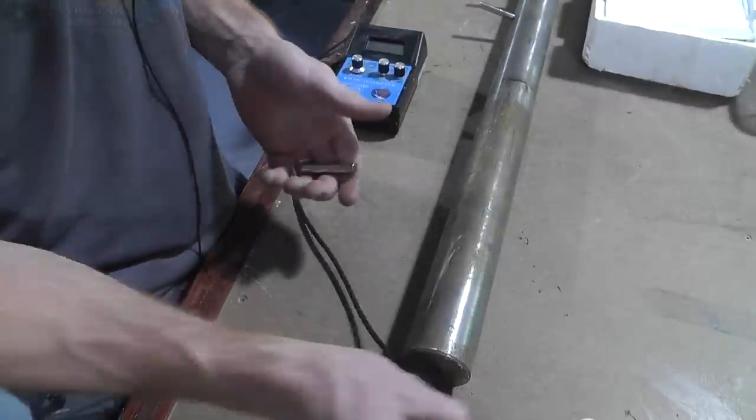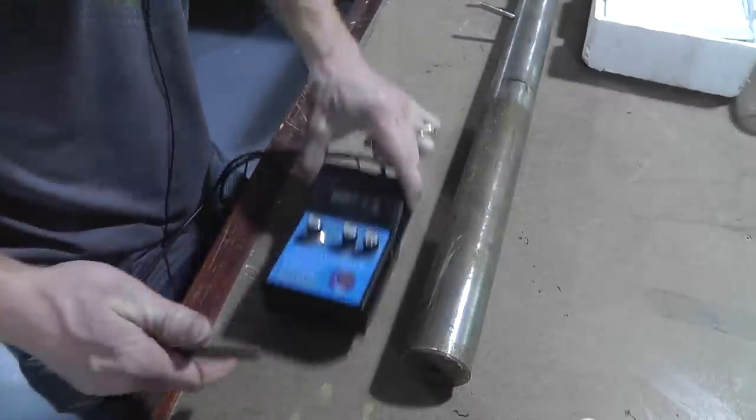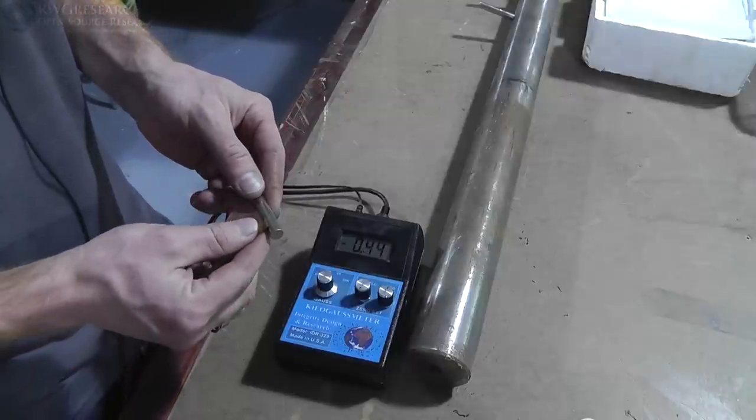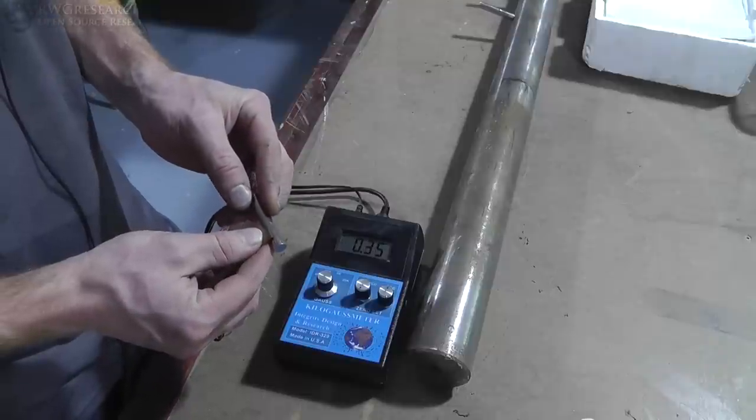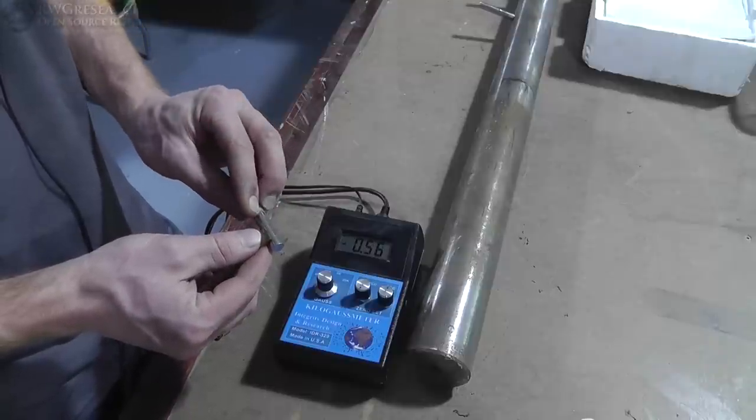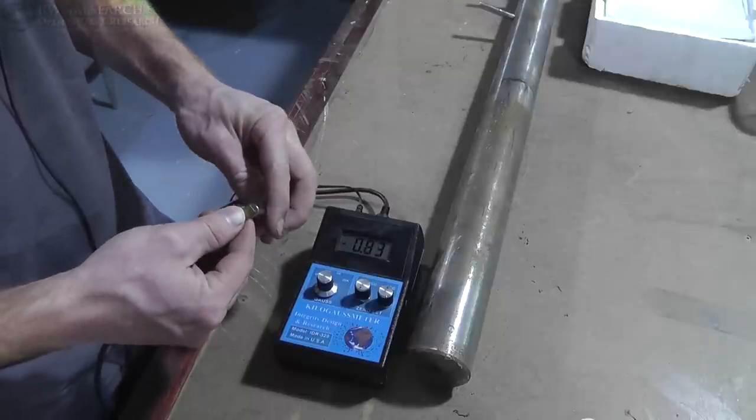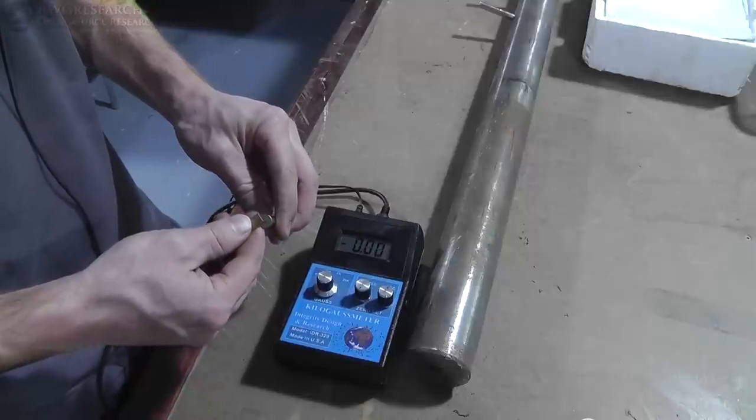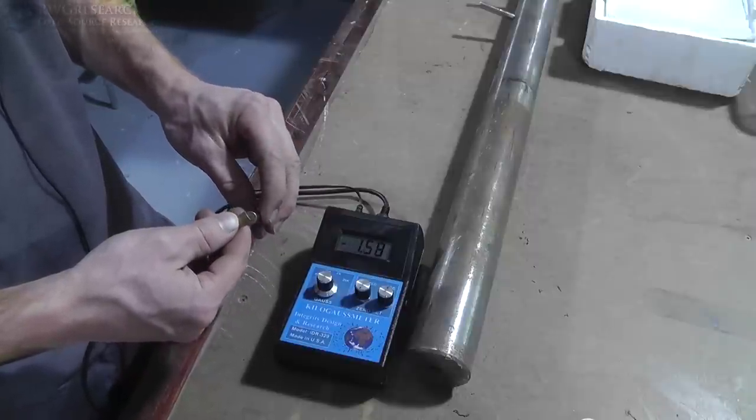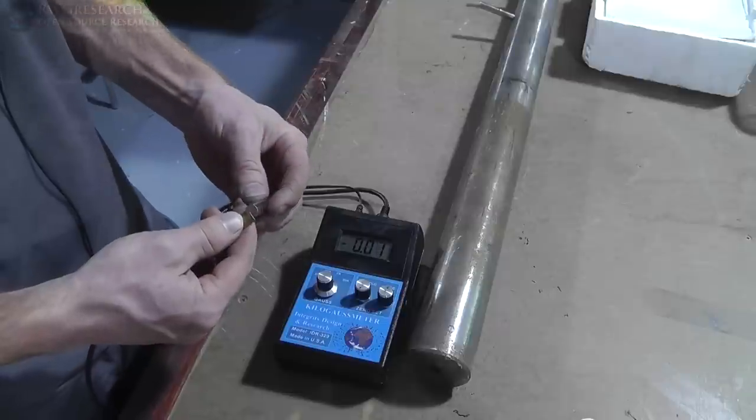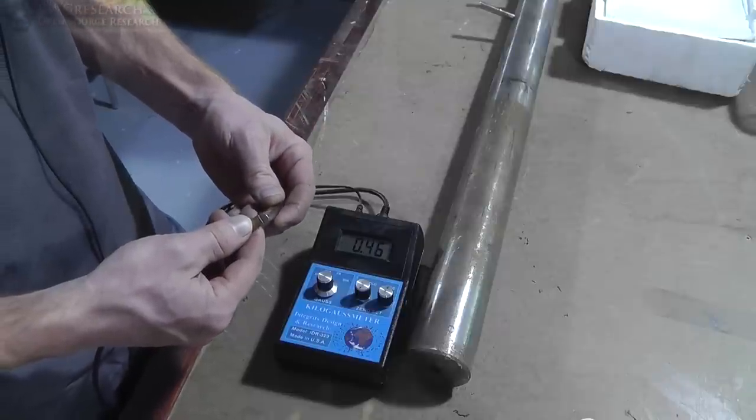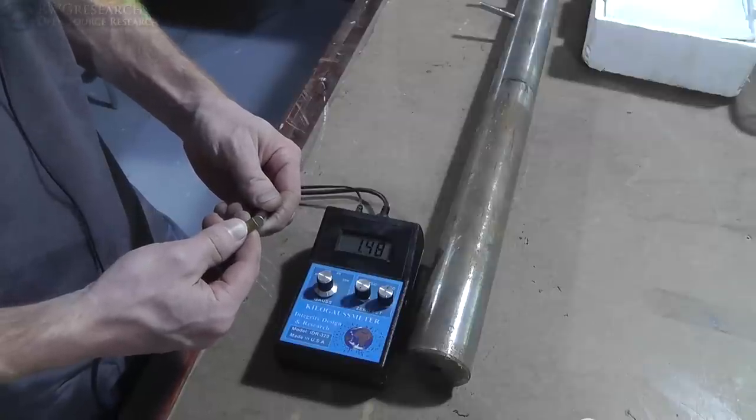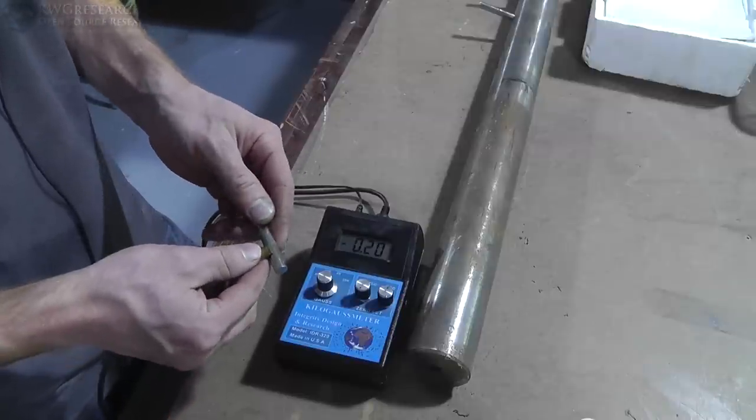It appears to have some polarity of some kind. See what happens when we rotate it. Negative to positive, back to negative. So that's 1.5 is the strongest on that side.